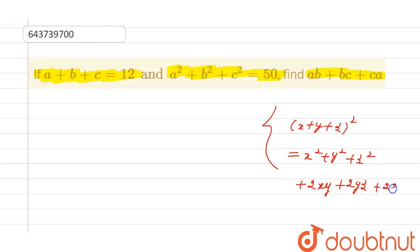So now first of all we can apply this formula: a plus b plus c the whole square is equal to a squared plus b squared plus c squared plus 2ab plus 2bc plus 2ca.